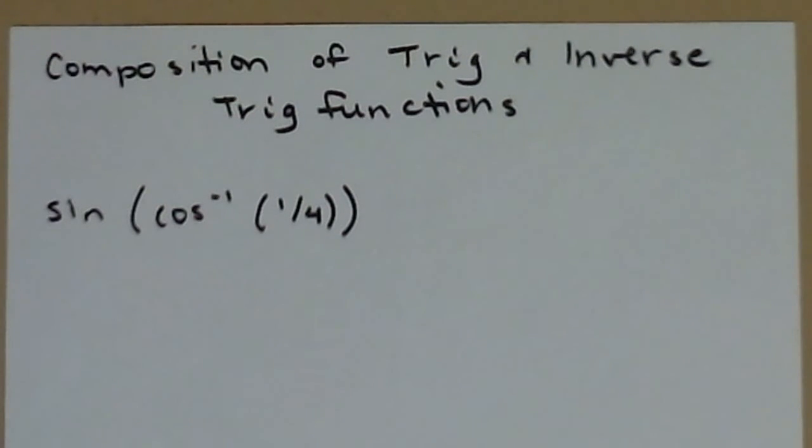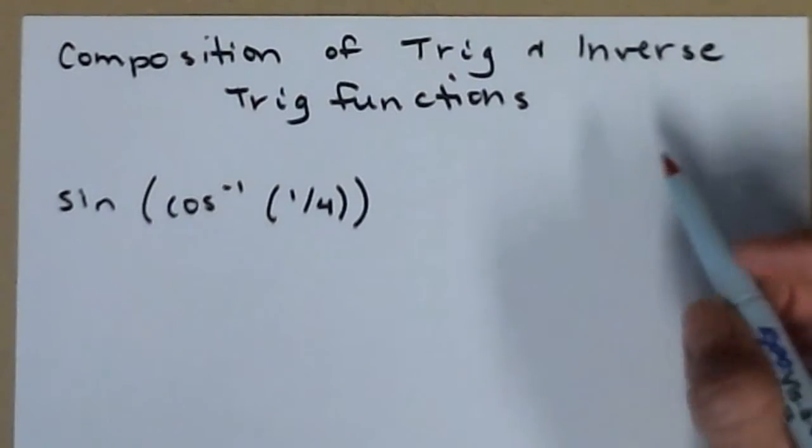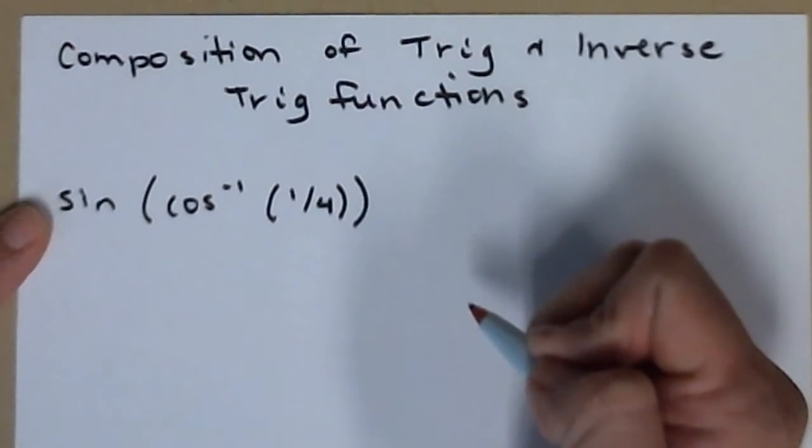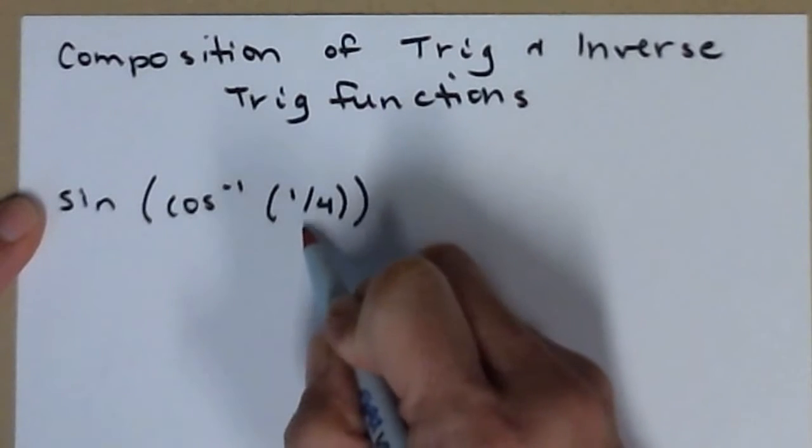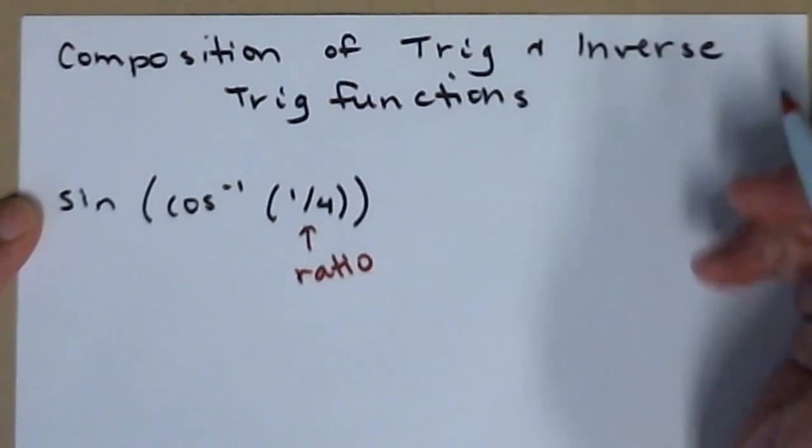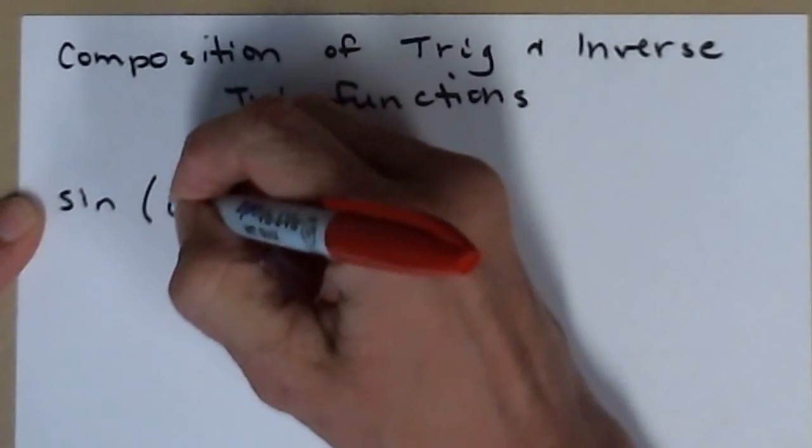The first one I have written down is the sine of the inverse cosine of one-fourth. We're taking the inverse cosine of this ratio. One-fourth is the ratio corresponding to the cosine of a given angle.